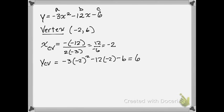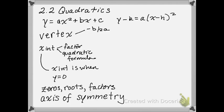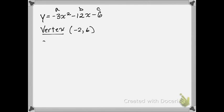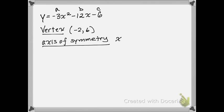Let's move down to the axis of symmetry, because that's pretty simple. The axis of symmetry is always the x-coordinate of the vertex. Whatever the x-coordinate of the vertex is, that's what the axis of symmetry is. In this case, the axis of symmetry is x equals negative 2.